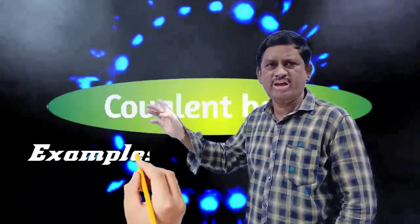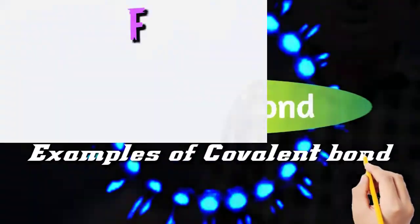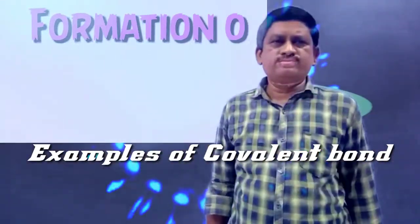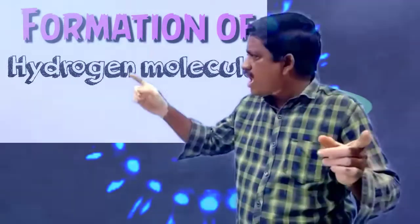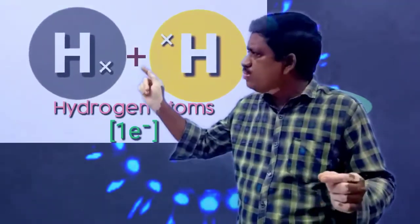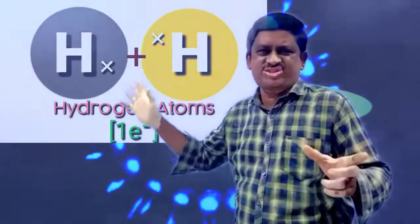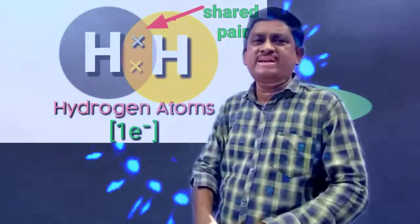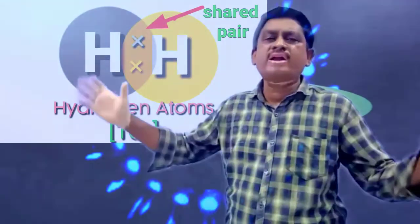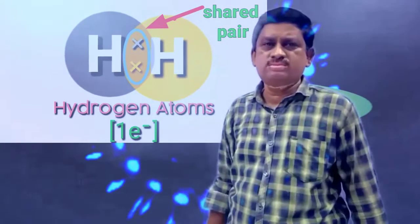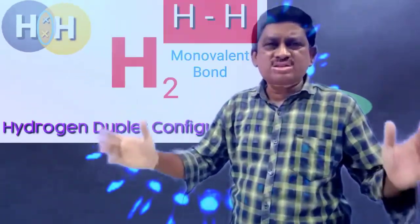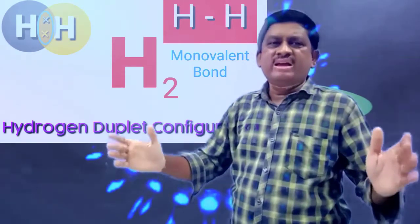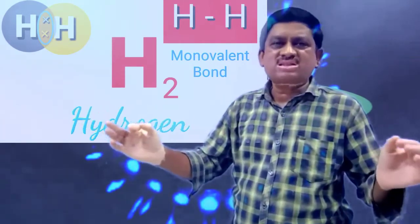Let us discuss about the examples of covalent bond. Hydrogen molecule: in hydrogen molecule, two hydrogen atoms are contributing one electron each. These contributing electron pair is bonded between the two hydrogen atoms. Finally, these two hydrogens are acquiring a helium gas configuration.